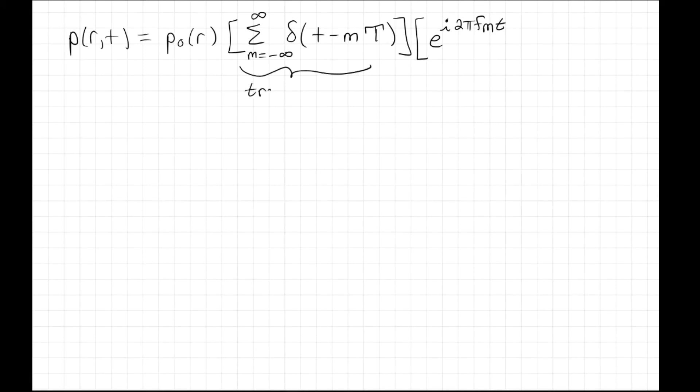So that middle term represents a train of pulses, like spike, spike, spike, spike, spike at different times, and the back term basically represents a sinusoid.